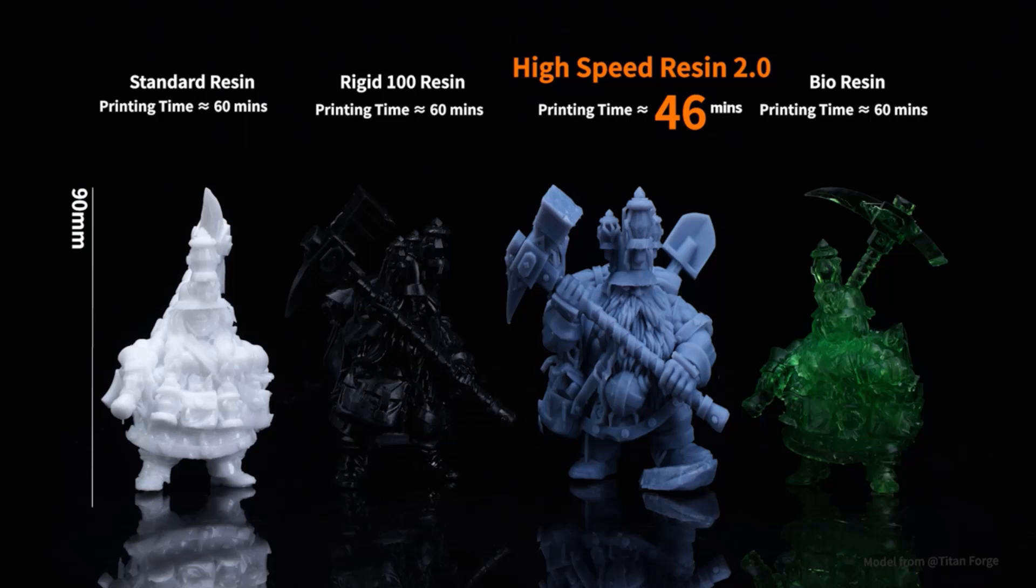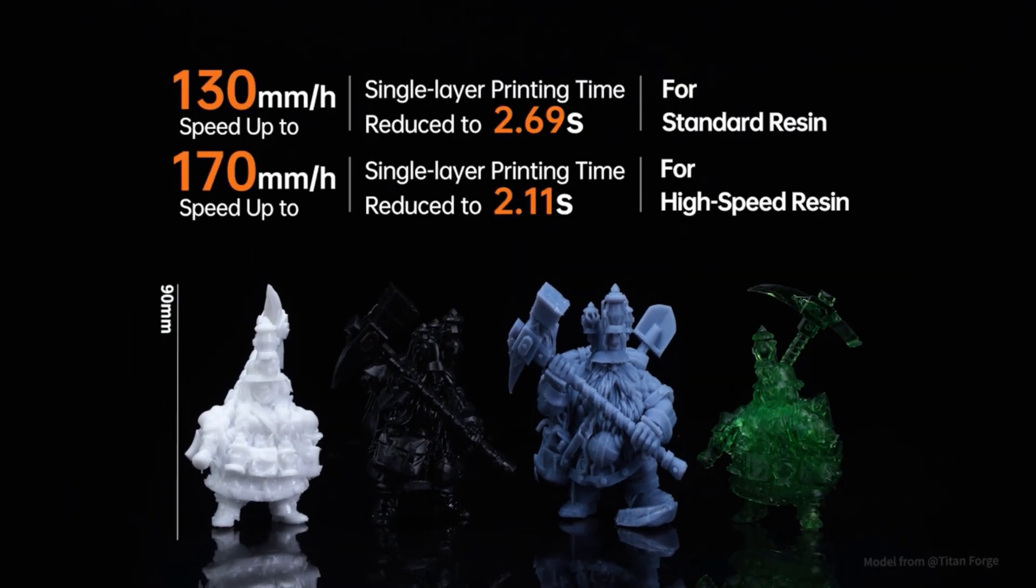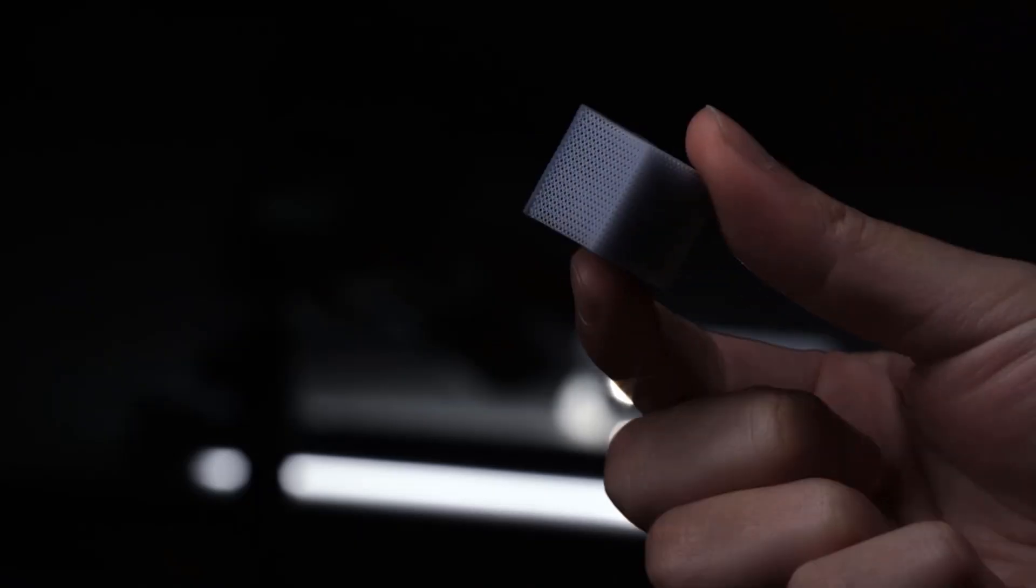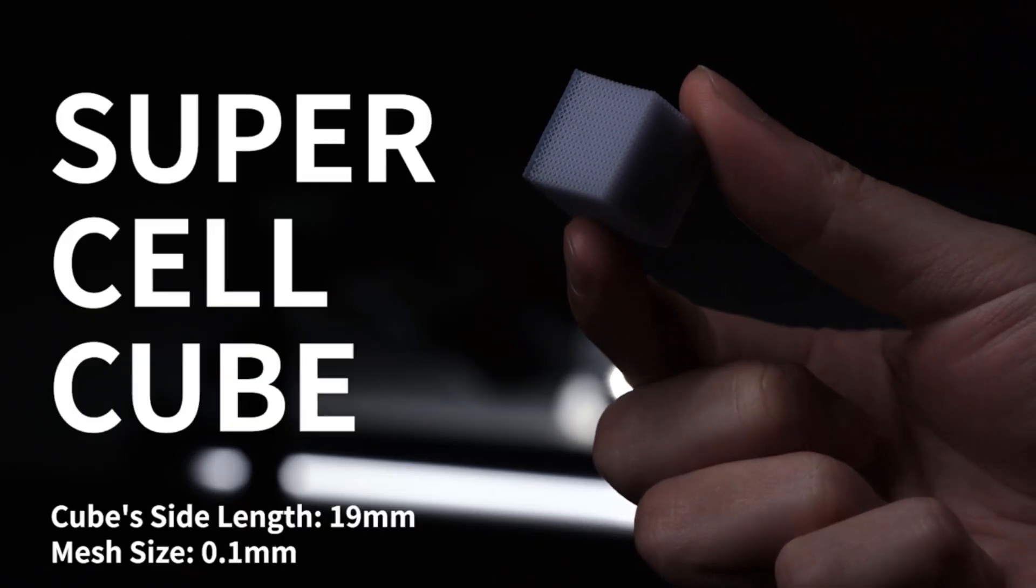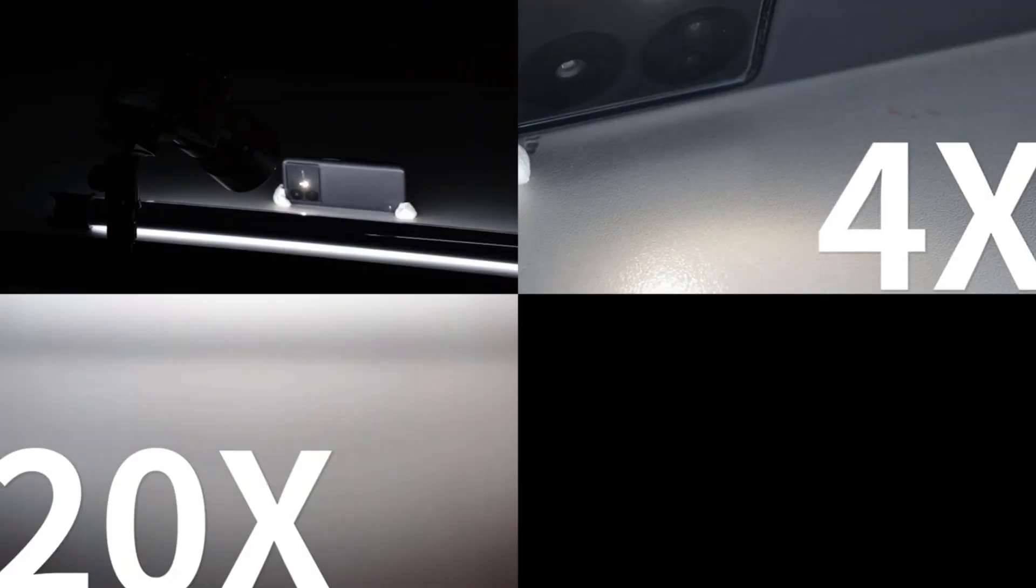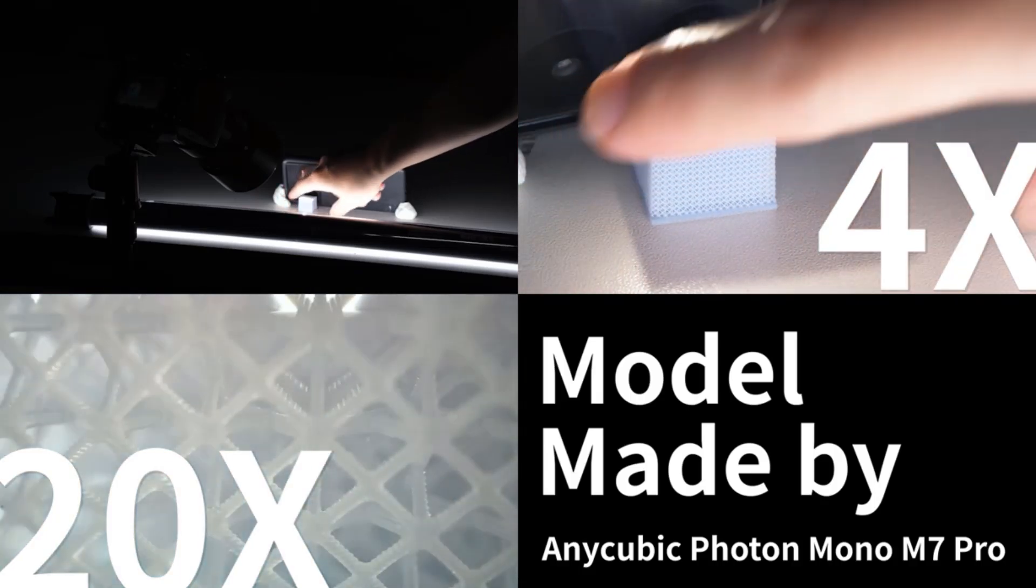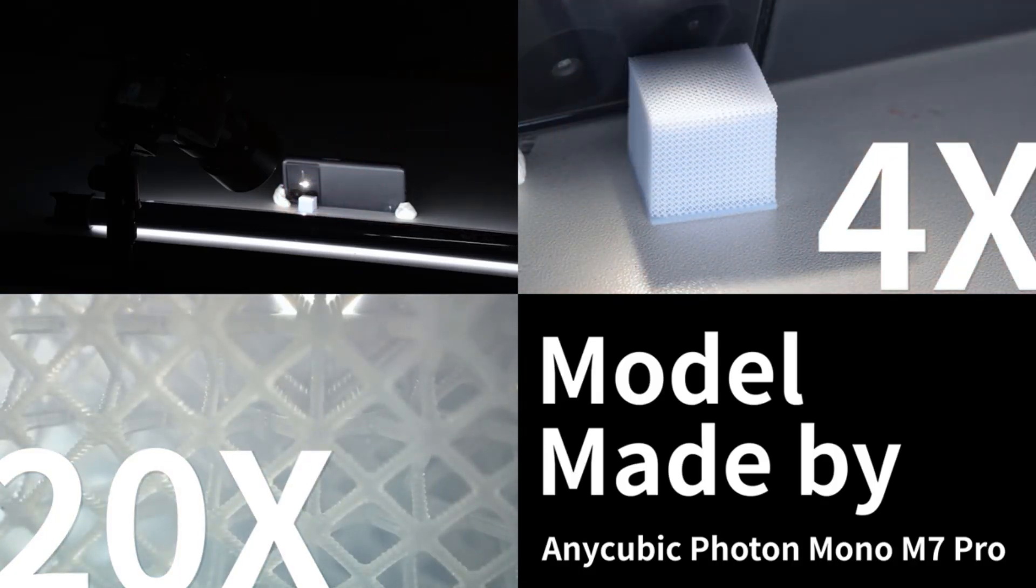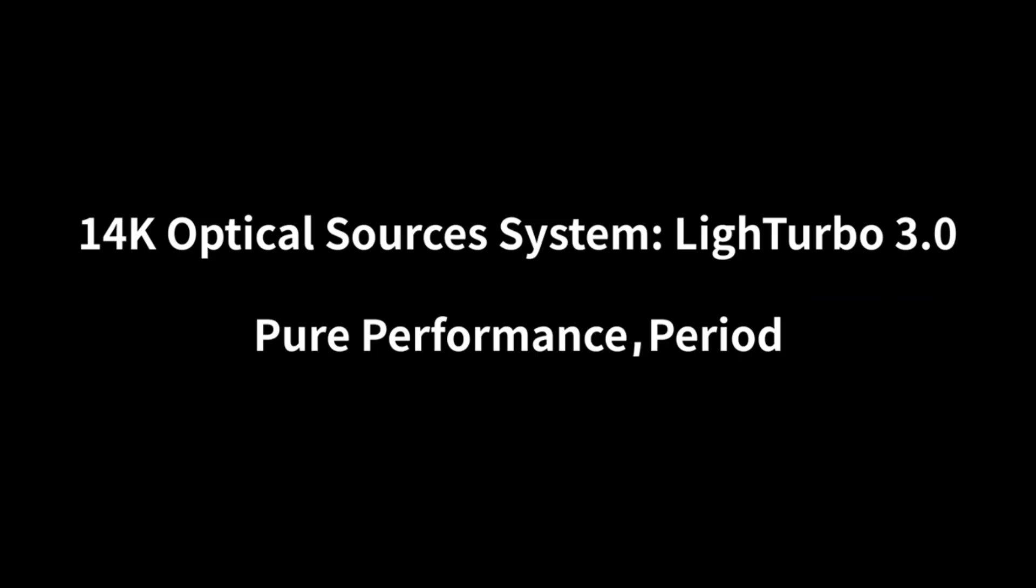The COB light source system combined with Fresnel lenses and front-facing reflectors with less than or equal to 3 degrees angle precisely controls each beam of light. Equipped with a light-off compensation algorithm, it can dynamically adjust the light-off time of the underscreen light source according to the exposure area of the printing model and the resin flow rate, ensuring that each layer of the model is successfully exposed and detached, improving the printing success rate. Photon Mono M7 Pro has a build volume of 223 x 126 x 230mm, providing ample space for your creativity.